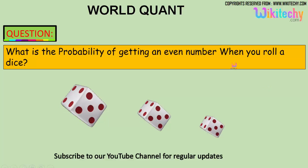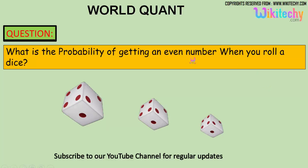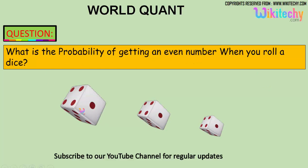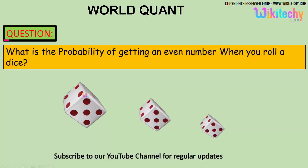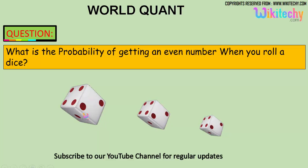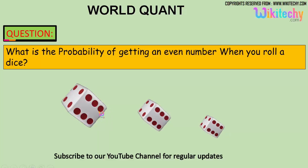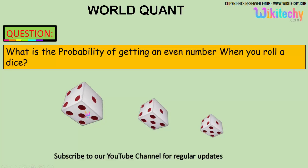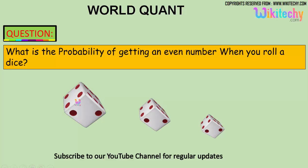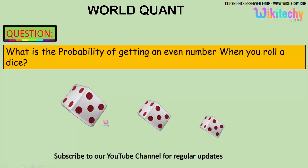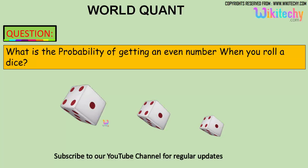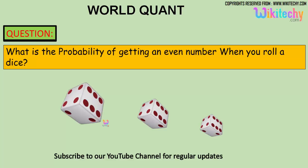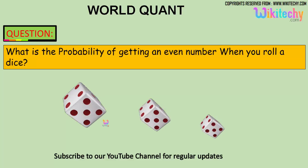So what is the probability of getting an even number when you roll a dice? A dice will have six numbers: one, two, three, four, five, and six. So we got six numbers, and what is the probability of getting an even number? That is the question.